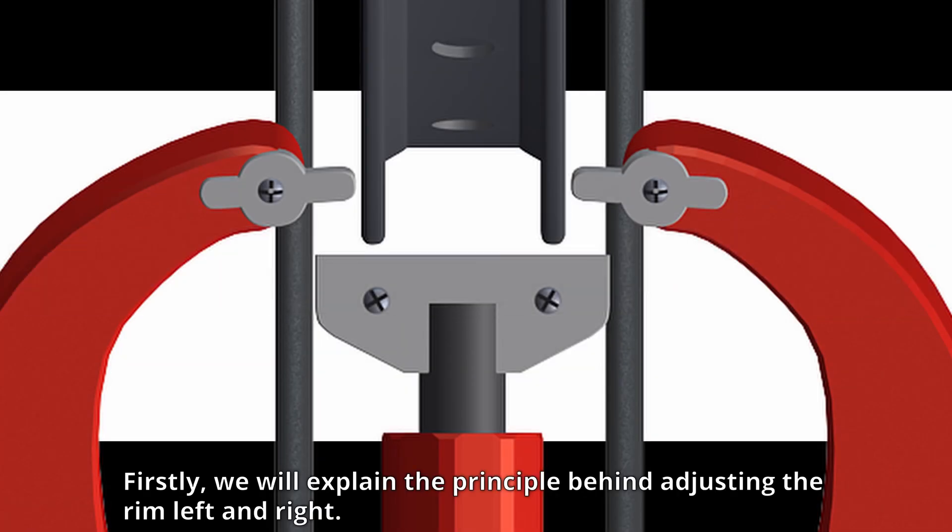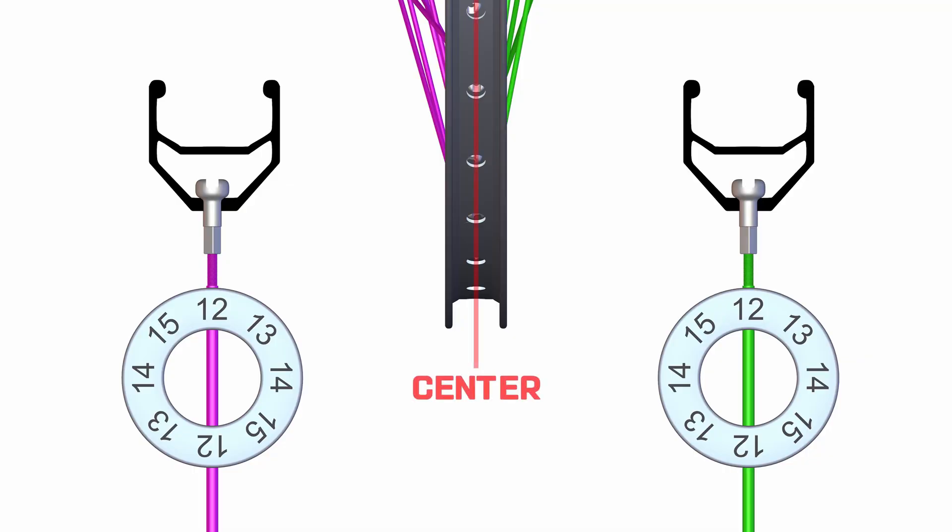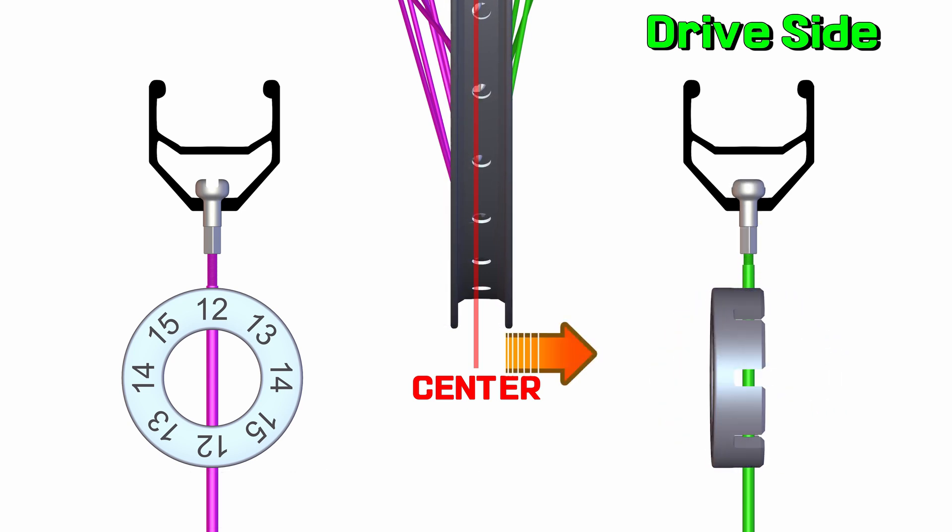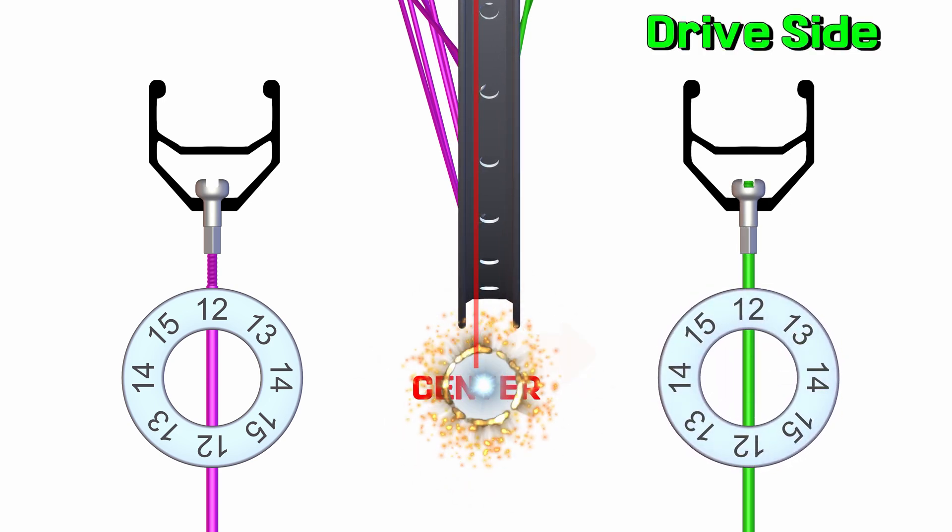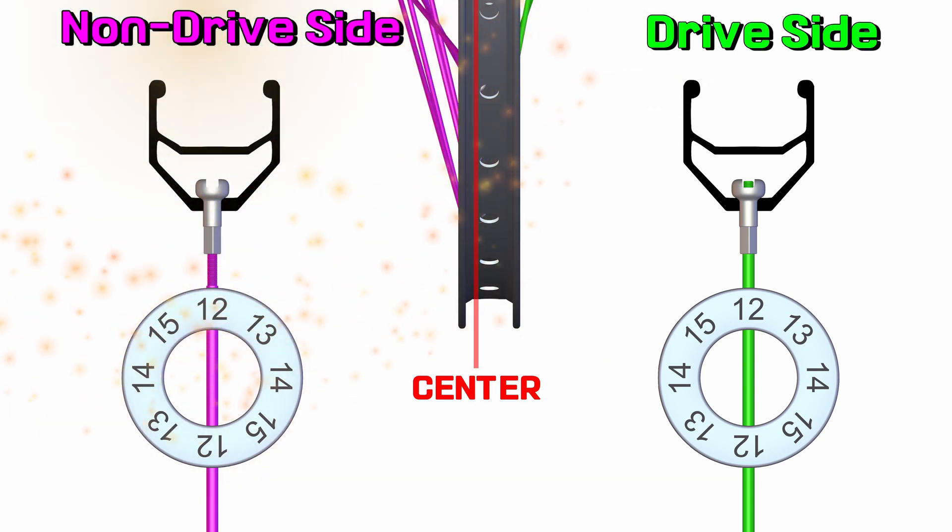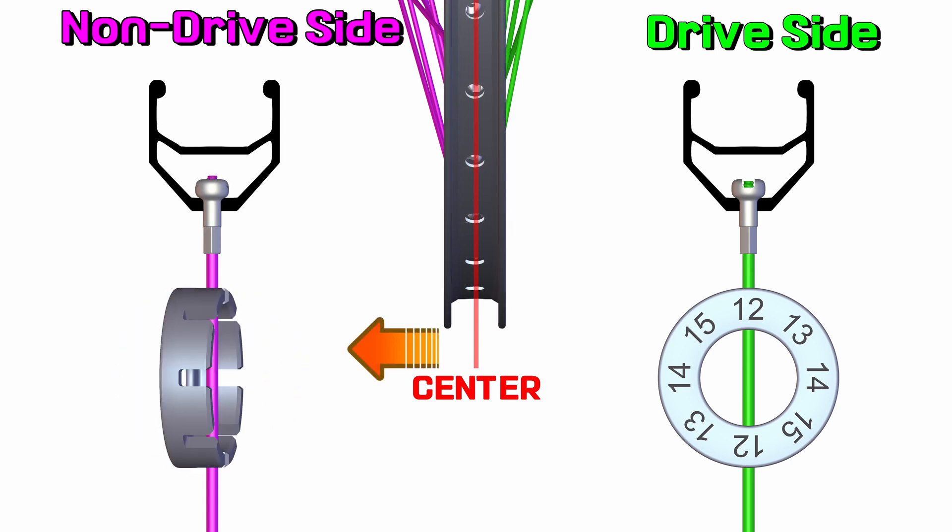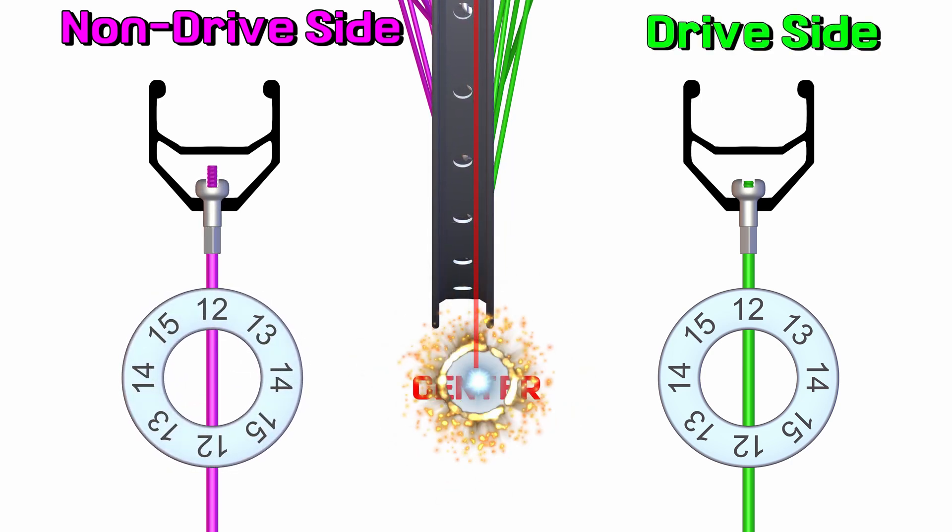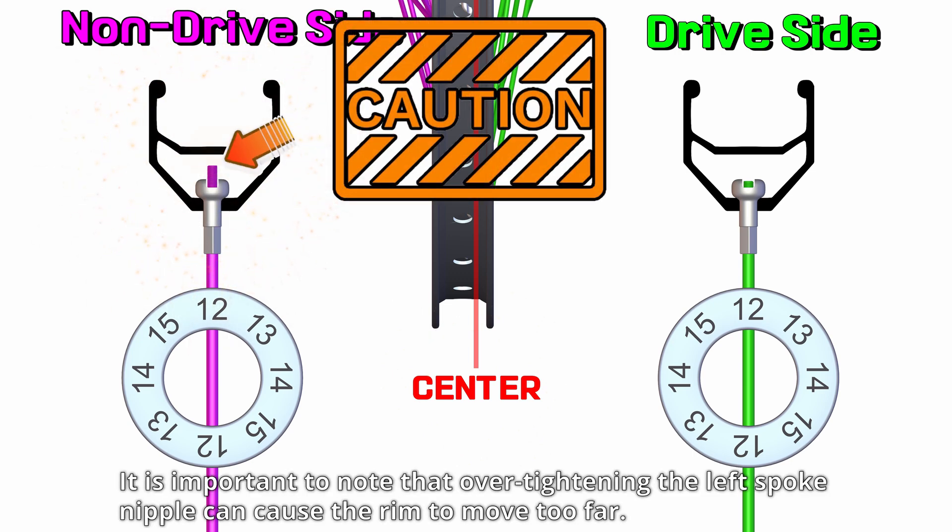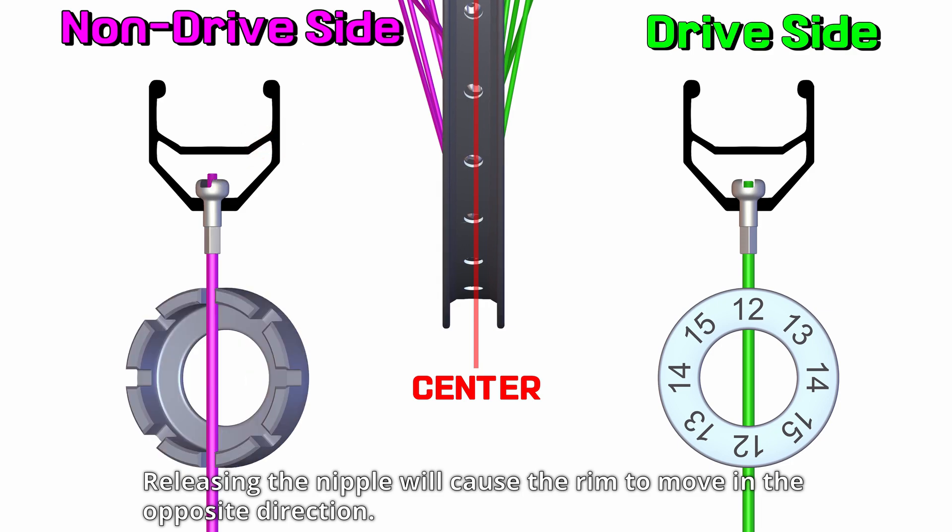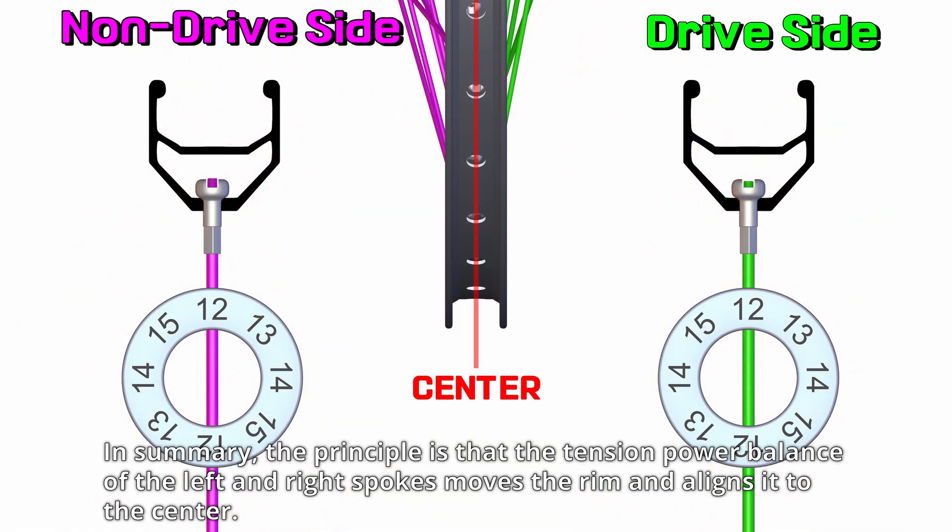Firstly, we will explain the principle behind adjusting the rim left and right. By tightening the right drive side spoke nipple, the rim will move to the right. Conversely, tightening the left non-drive side spoke nipple will move the rim to the left. It is important to note that over-tightening the left spoke nipple can cause the rim to move too far. Releasing the nipple will cause the rim to move in the opposite direction. In summary, the principle is that the tension power balance of the left and right spokes moves the rim and aligns it to the center.